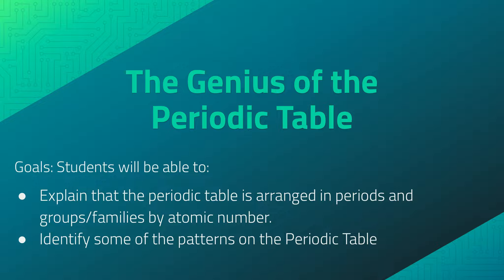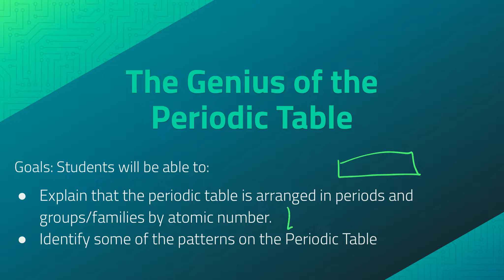Hi everyone, it's Mrs. Summer here to discuss the genius of the periodic table. The goal for this lesson is that students will be able to explain that the periodic table is arranged in periods and groups/families by the atomic number. The periods are the horizontal rows and the groups/families are the vertical columns on the periodic table, and also identify some of the patterns on the periodic table.